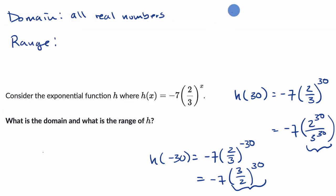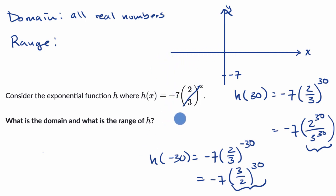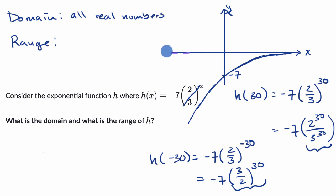One way to visualize this graph — let me draw it quickly. If this is the x-axis and this is the y-axis, we can think about when x equals zero: two-thirds to the zero is all one, so h of zero equals negative seven. When x is very negative, h takes on very large negative values. And as x becomes more and more positive, the function approaches zero but never quite exactly gets there. So we can draw that dotted asymptote line right over there.